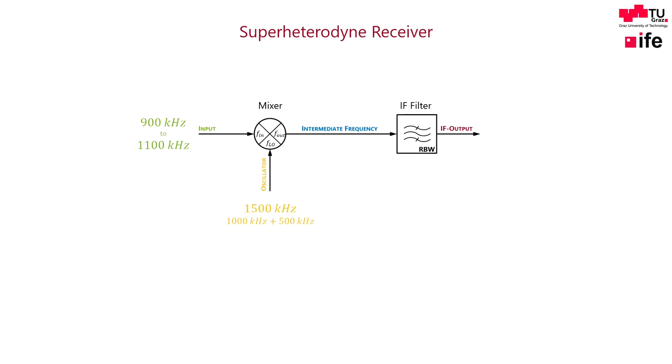Now that we have clarified the term superheterodyne, let us check out the following example. This can be an AM radio receiver for example. Let us assume that the input frequency range of the radio ranges from 900kHz to 1100kHz. Let us say that we want to hear a channel streamed on 1MHz. To hear this channel we need to set our oscillator appropriately.